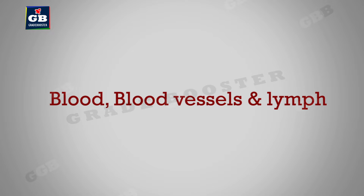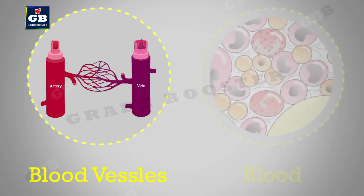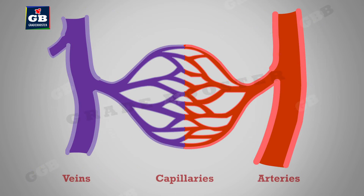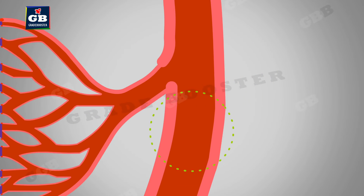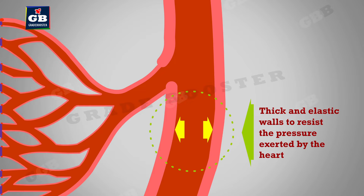In this video we will learn about blood vessels and blood. The blood vessels present in our body are arteries, veins, and capillaries. Arteries are the vessels that have thick and elastic walls to resist